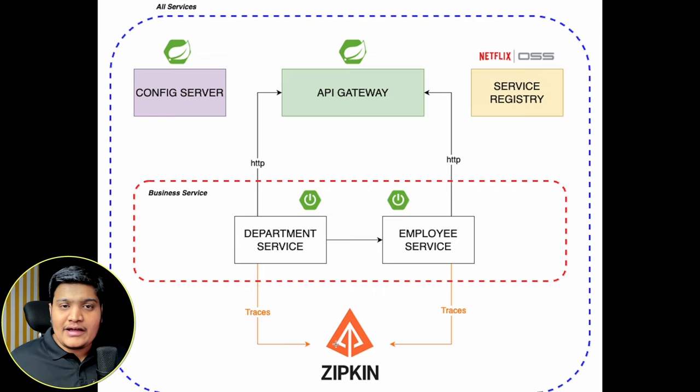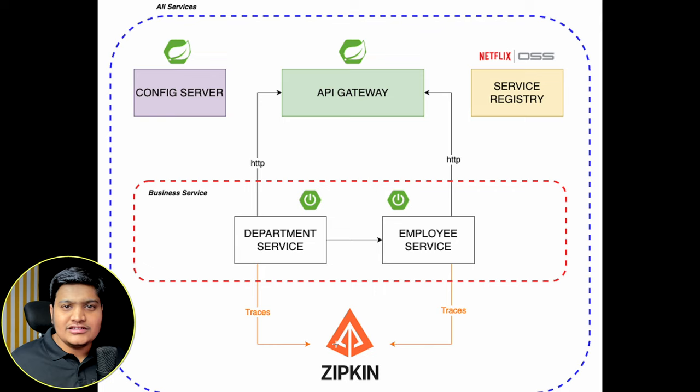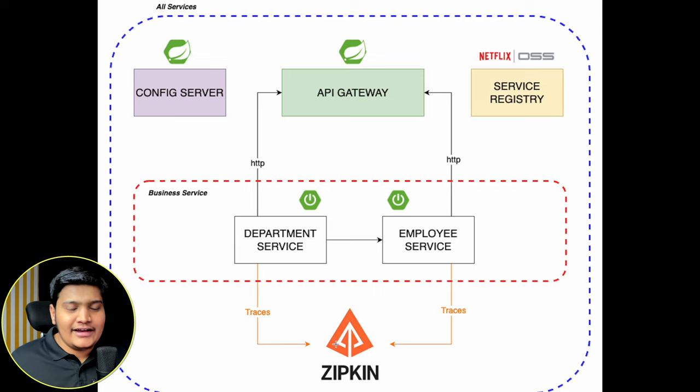So this is the entire architecture we are going to build today — business services (Department and Employee) and non-functional services (Service Registry, API Gateway, Config Server, and Zipkin). There are more components involved in microservices, but this is the basic block you need to know. Based on your requirements you can add different components.